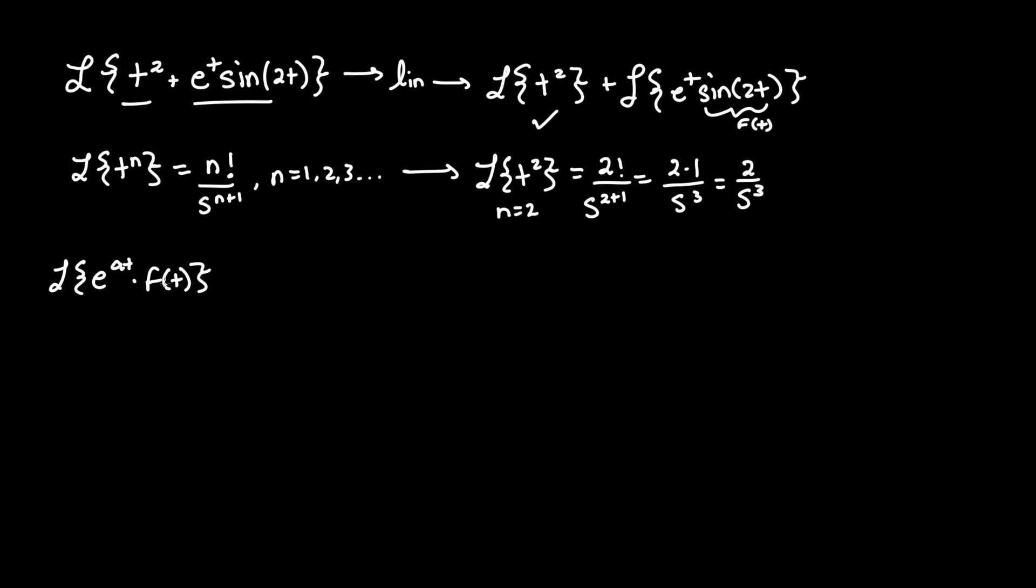We'll turn our Laplace of f of t into, we'll call it capital F to differentiate it, F of s minus a. So normally, the Laplace of lowercase f of t is just capital F of s. But when you're multiplying by e, it changes that value from F of s to F of s minus a.